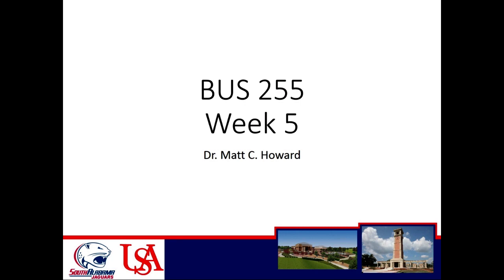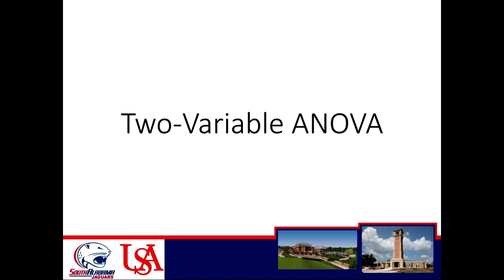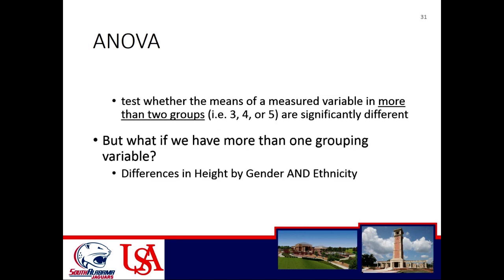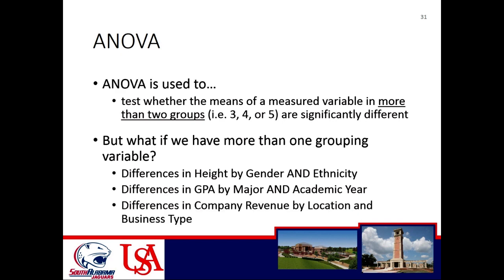Still Business 255, still week five. Now we're going to cover two variable ANOVA. An ANOVA is still used to test whether the means of a measured variable in more than two groups are significantly different — but now the question is: what if we have more than one grouping variable? Each grouping variable by default has at least two groups. So we might have two variables each with two groups, giving four total groups, or two variables with two and three groups giving six total groups.